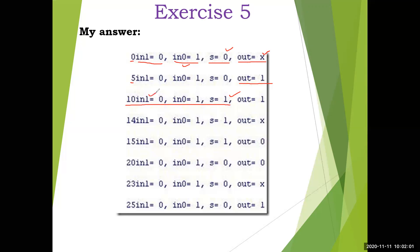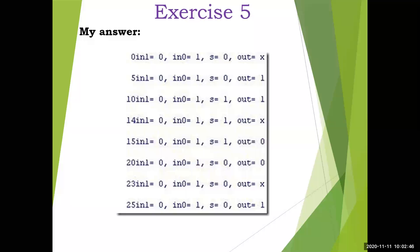When select line becomes 1, In1 should appear at the output. But it won't happen immediately — it will hold the previous output. Up to time 14, the previous value is held, then at time 14 it transitions to X, and at time 15 the output changes to 0. At time 20, select line is changed back to 0, so In0 should come back as 1, but up to time 23 it remains X, and at time 25 it becomes 1.